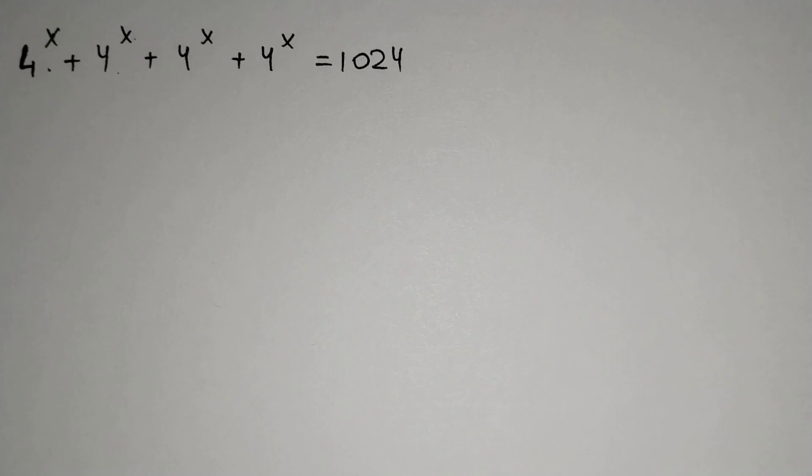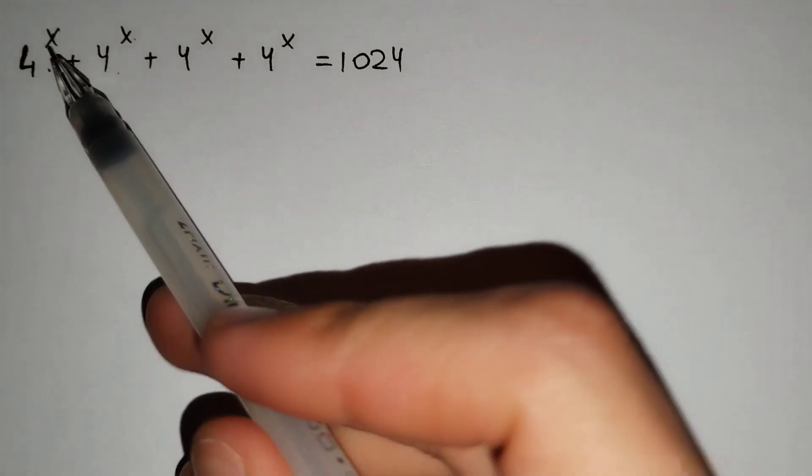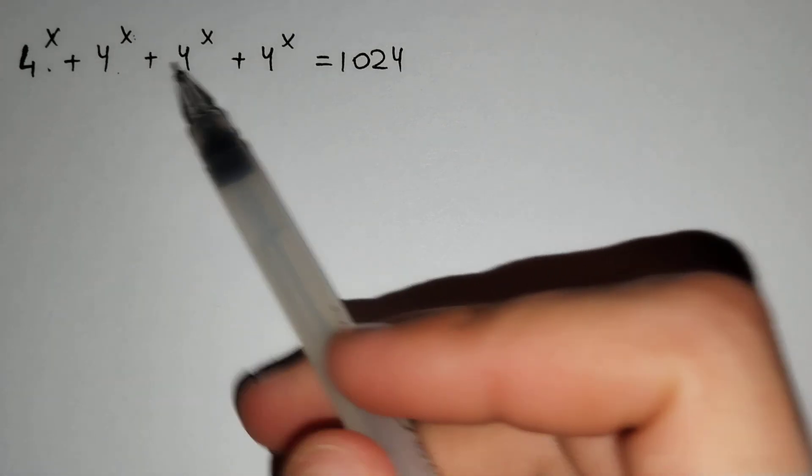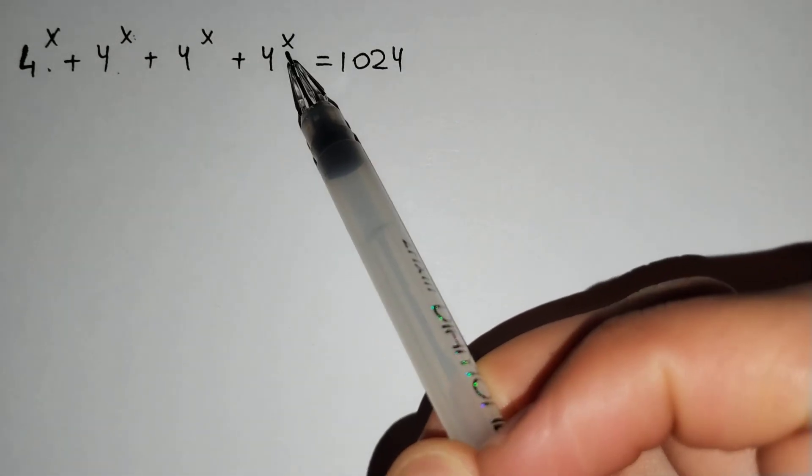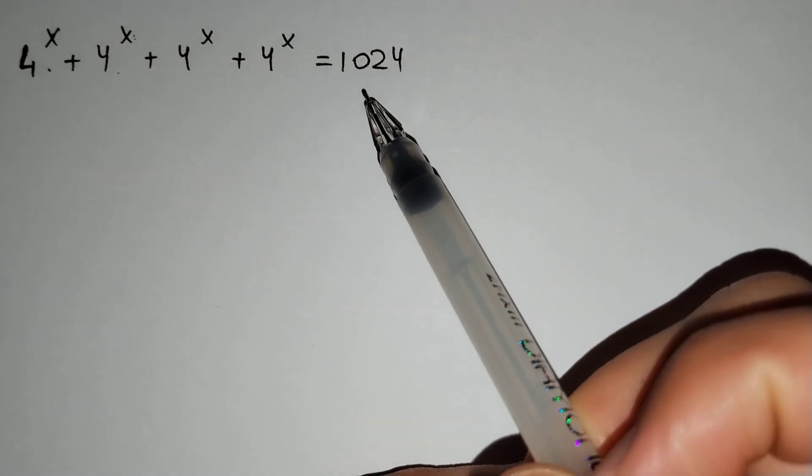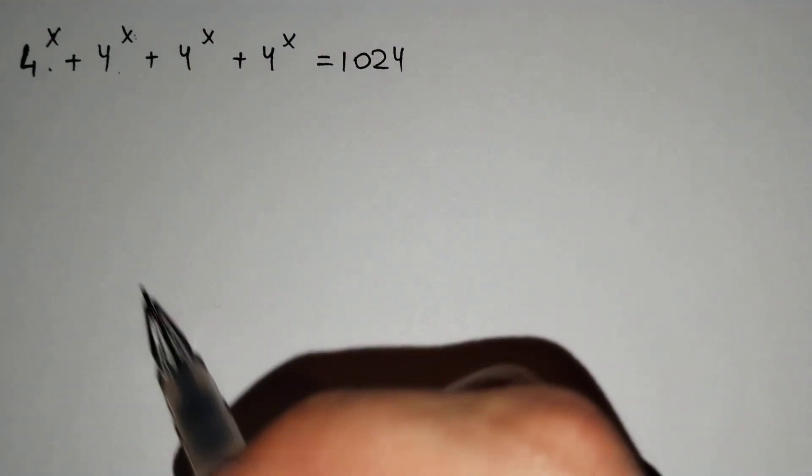Hi everyone. In this video we will solve this problem: 4^x + 4^x + 4^x + 4^x = 1024. How should we solve this problem?